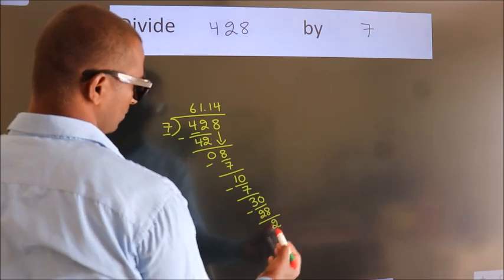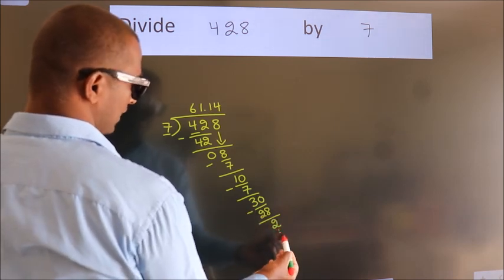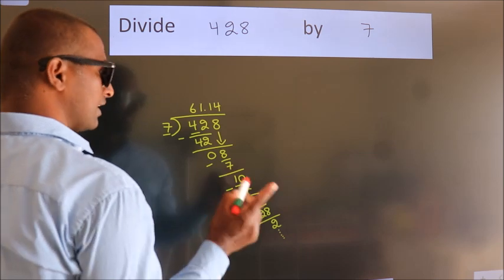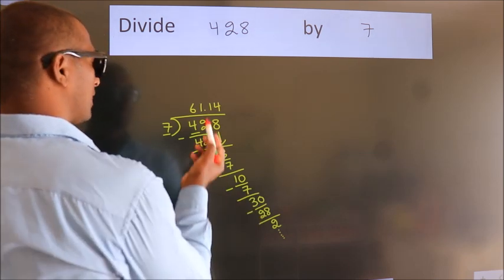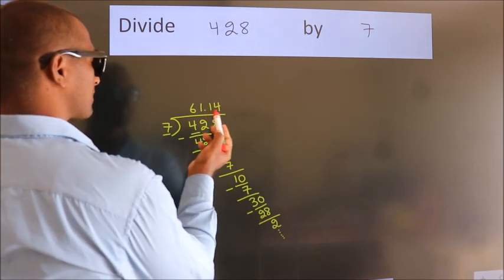Now we subtract and get 2. And you continue the division. It is enough if we do up to two decimal places.